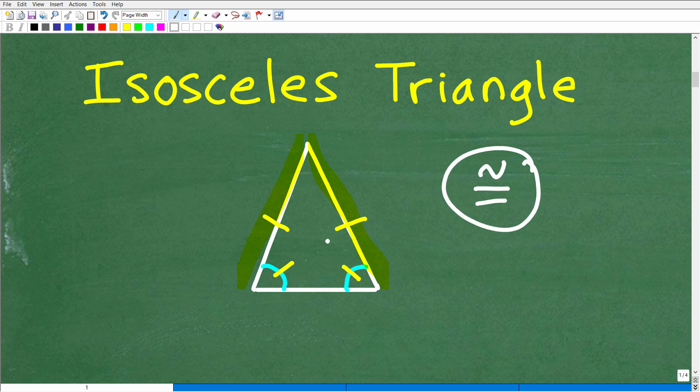So now another way I can show that is by using these little lines right here. You see this little yellow line right there? That's indicating that this side and this side are the same length. So we have a triangle where two of the sides are congruent or the same length. So we have an isosceles triangle. That's basically it.